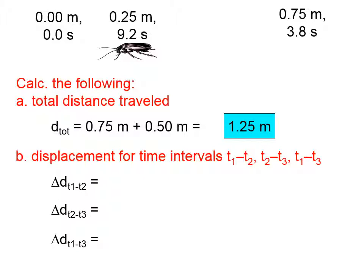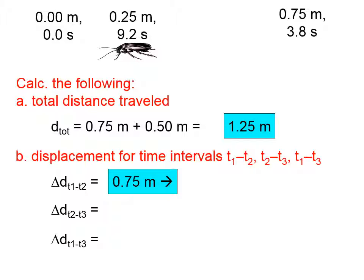Let's calculate the displacement for each time interval. Between times 1 and 2, the cockroach travels 0.75 meters to the right. Between times 2 and 3, he travels 0.5 meters to the left. For time interval 1 to 3, displacement only accounts for where we are at the beginning and end of the time interval, so the cockroach has undergone a displacement of 0.25 meters to the right.